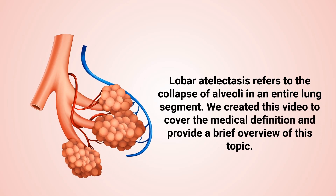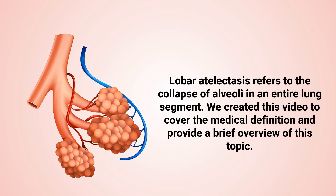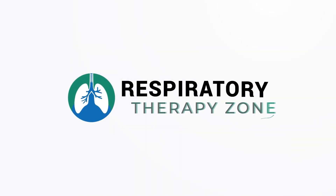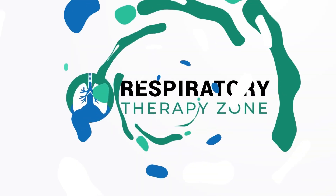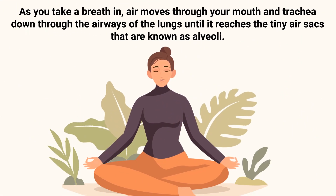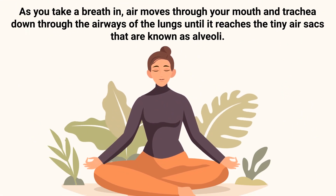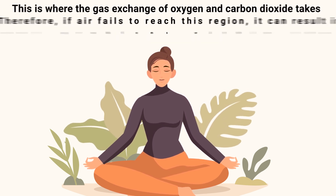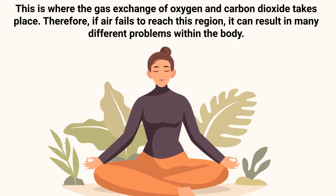Lobar atelectasis refers to the collapse of alveoli in an entire lung segment. As you take a breath in, air moves through your mouth and trachea, down through the airways of the lungs, until it reaches the tiny air sacs known as alveoli. This is where the gas exchange of oxygen and carbon dioxide takes place.